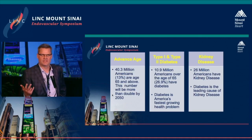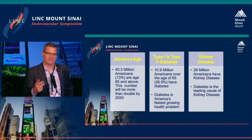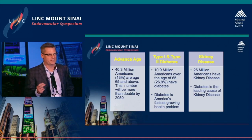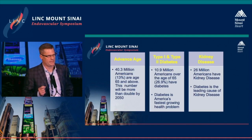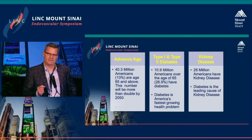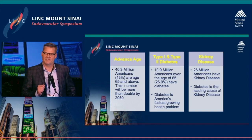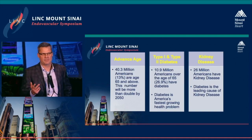The demographics of the population are changing, not only in the U.S. but also worldwide. People are getting older — the fastest growing age population is those older than 80. One out of four Americans over the age of 65 have diabetes, and the number one cause of renal insufficiency is diabetes.